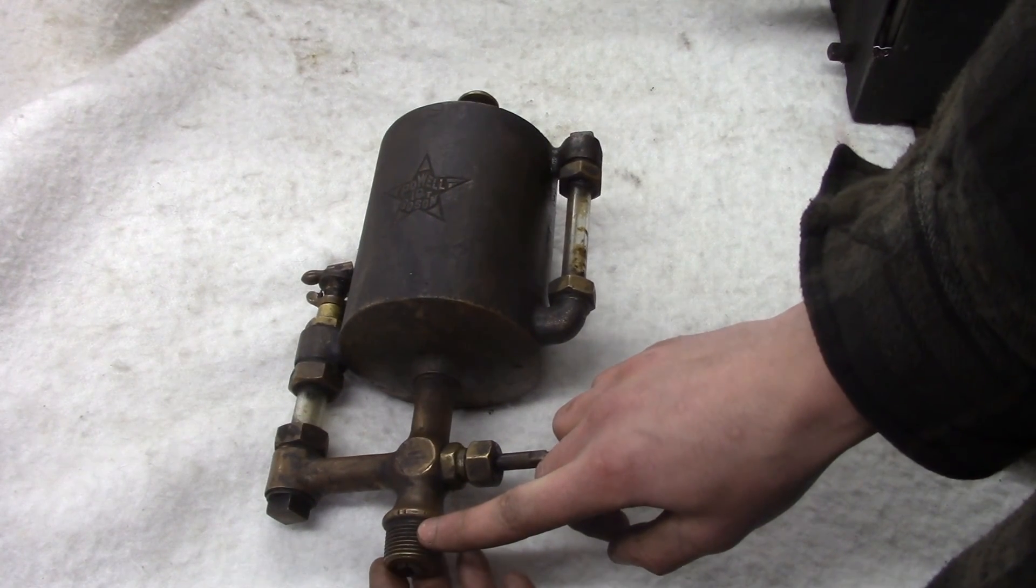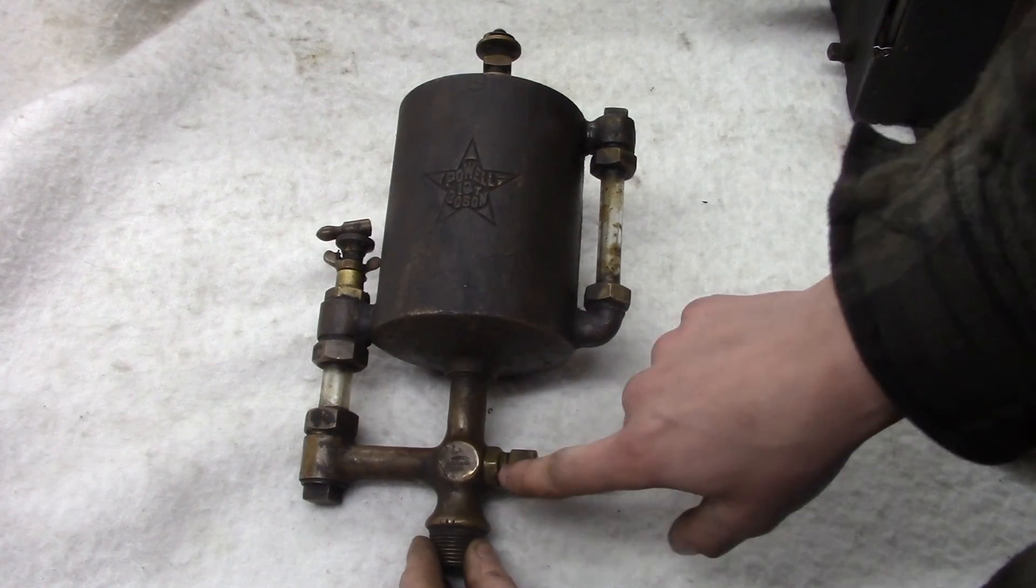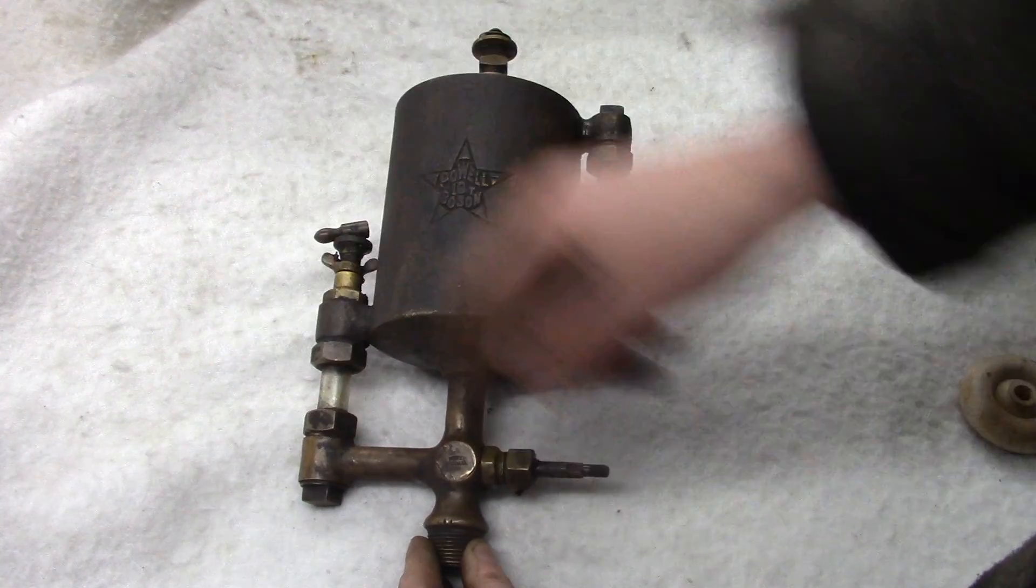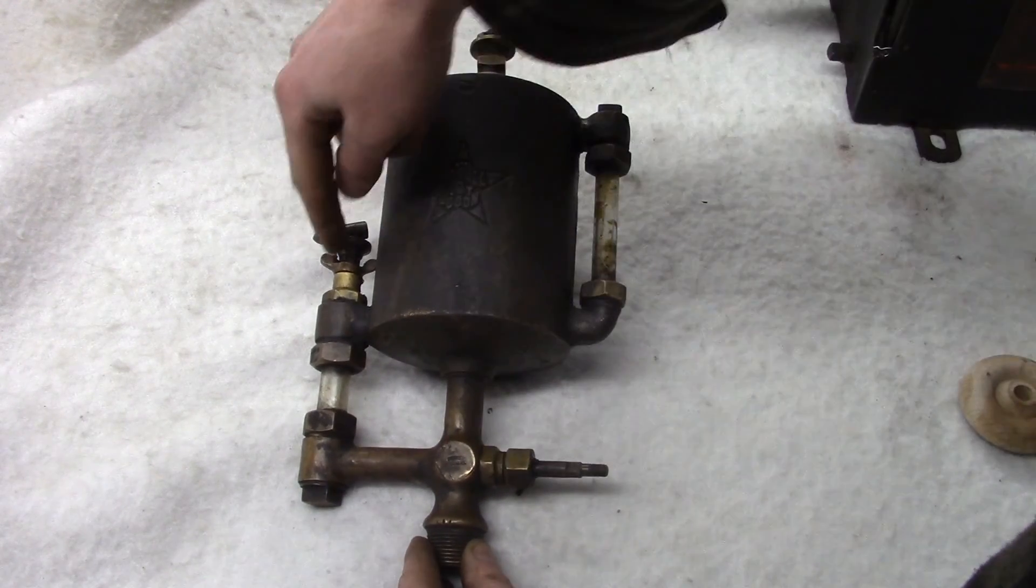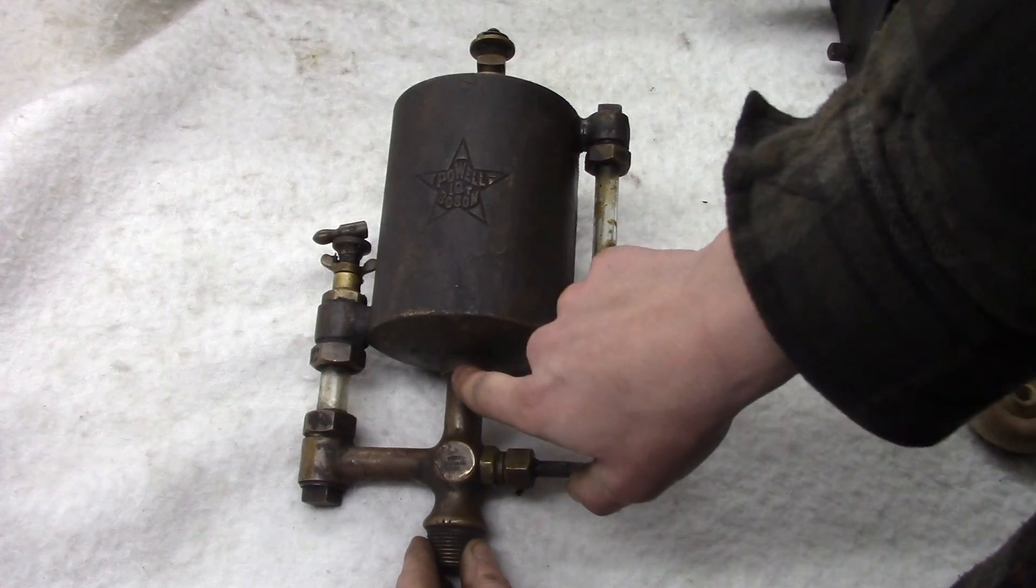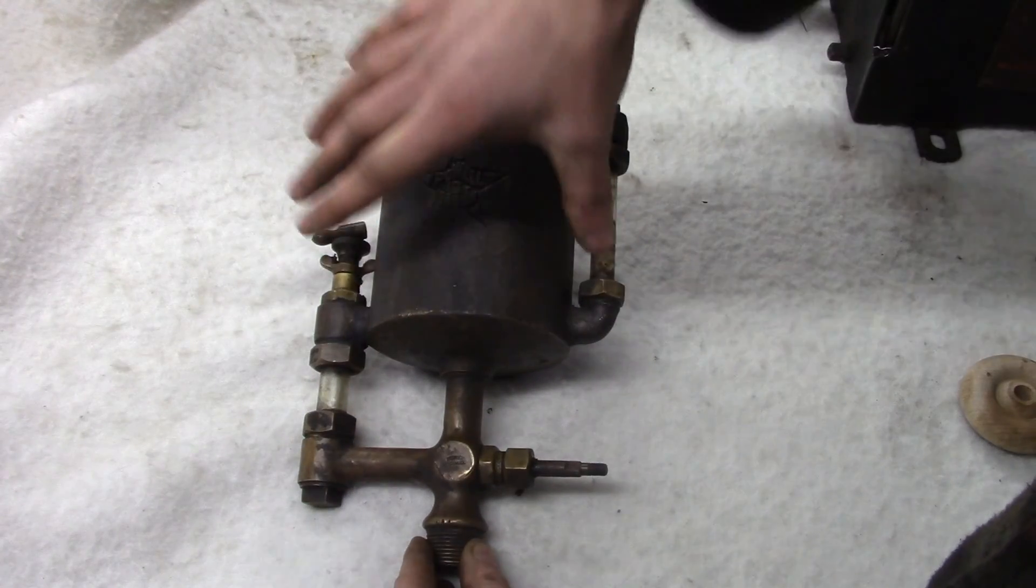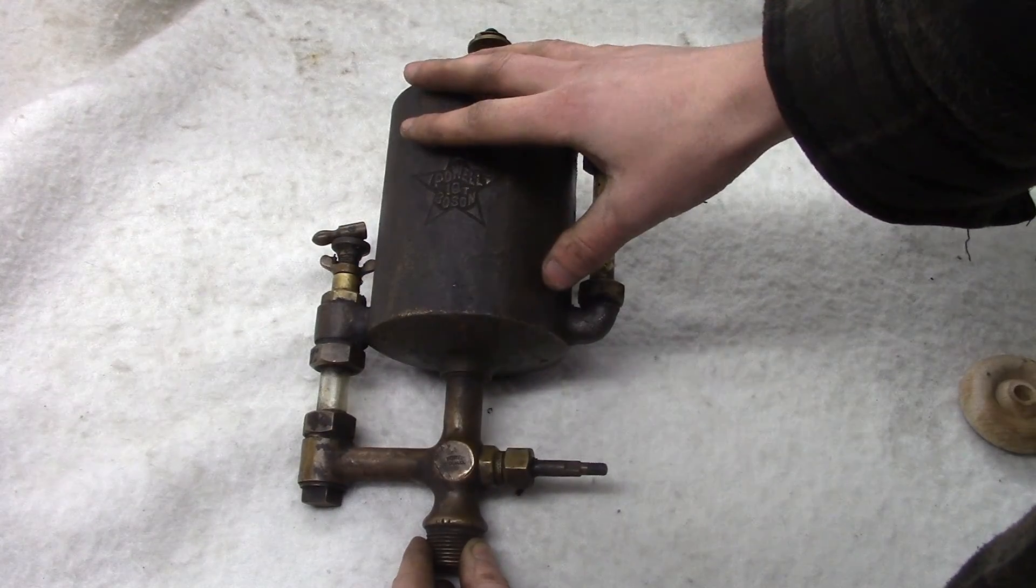There's another valve, a shutoff valve here, and then down here is the threaded portion that threads into the cylinder. Now there's two check valves in here. This is just a needle valve, this is a needle valve. This is used for shutoff, you don't need to throttle with this valve, but you do throttle the oil flow with this needle valve here. And there's a check valve here and a check valve here. Now it's difficult to explain just by pointing at things, so let me show you something.